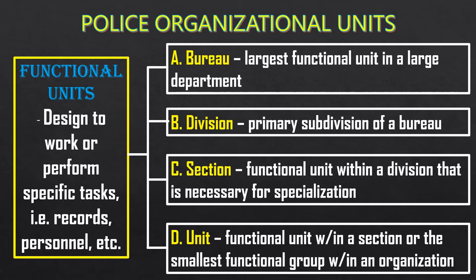The largest functional unit in a large department is the bureau. Next is the division, the primary subdivision of a bureau. Then the section, which is a functional unit within a division necessary for specialization — for example, within an investigation division you have a homicide section and a theft and robbery section. Finally, the unit is the smallest functional group within an organization, a functional unit within a section.